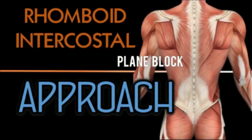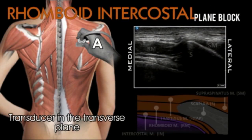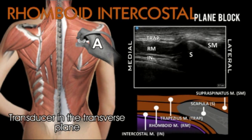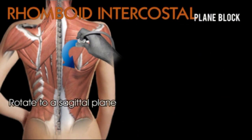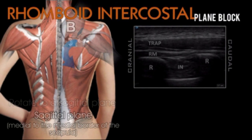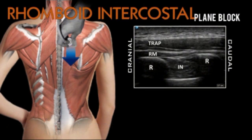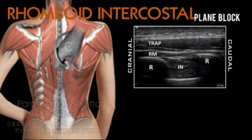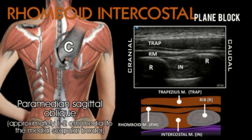Place a linear transducer in the transverse orientation over the medial border of the scapula. Identify the trapezius, rhomboid, and intercostal muscles. Then rotate the ultrasound probe 90 degrees to the sagittal plane and identify the tissue plane between the rhomboid, intercostal muscles, and the ribs.